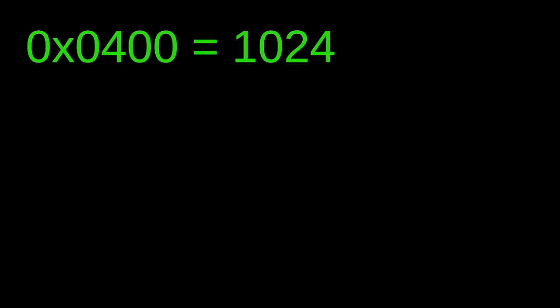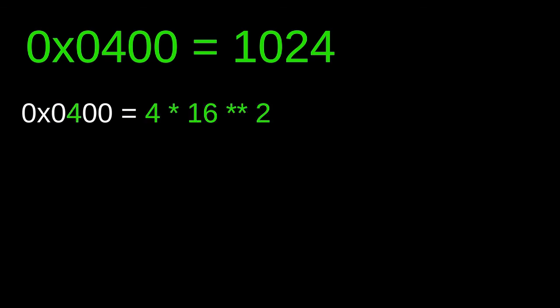Now we can convert the hexadecimal value 0x0400 and see that it equals 1024. The value in position 3 (counting from the right) is 0, so it adds nothing. The value in position 2 is 4, so we multiply 4 by 16 raised to the power of 2. The first and 0th positions are both 0. So 0x0400 equals 4 times 16 squared, which equals 1024.